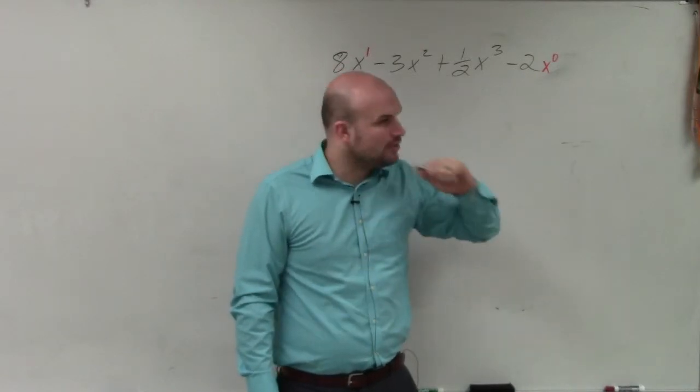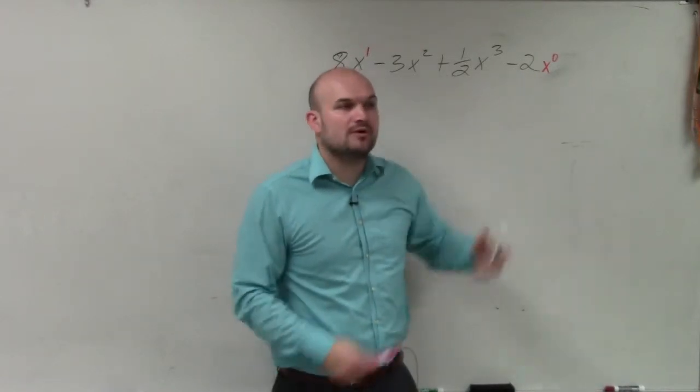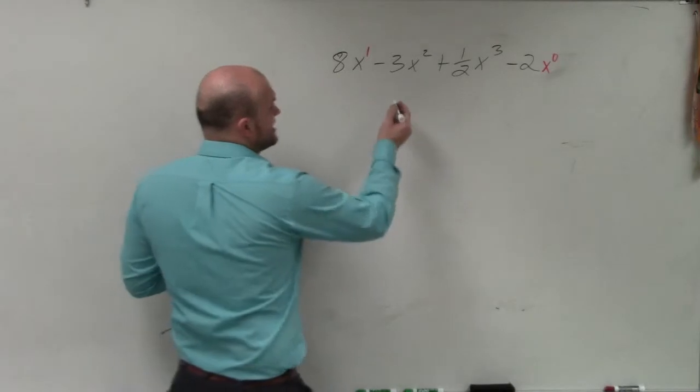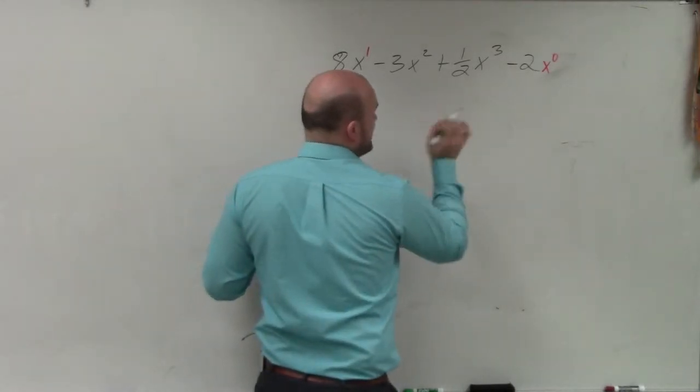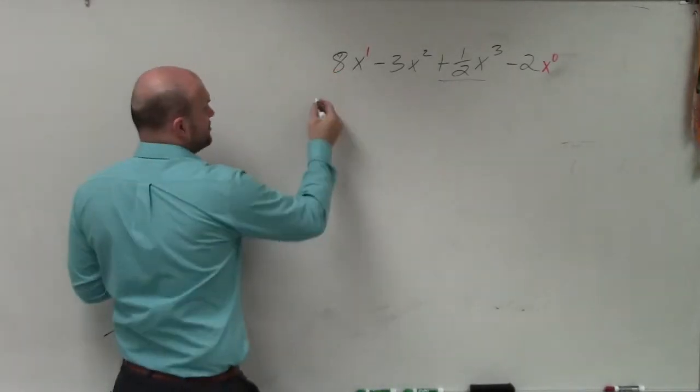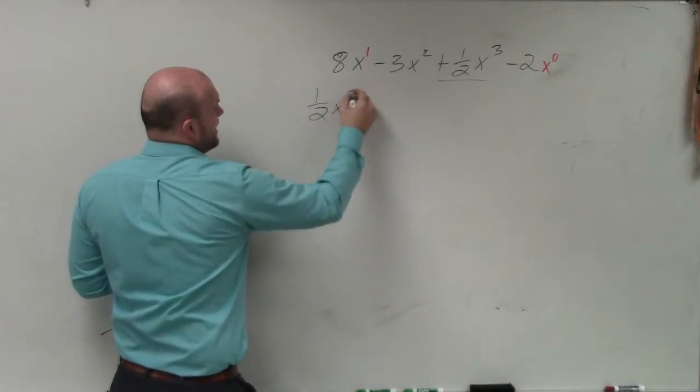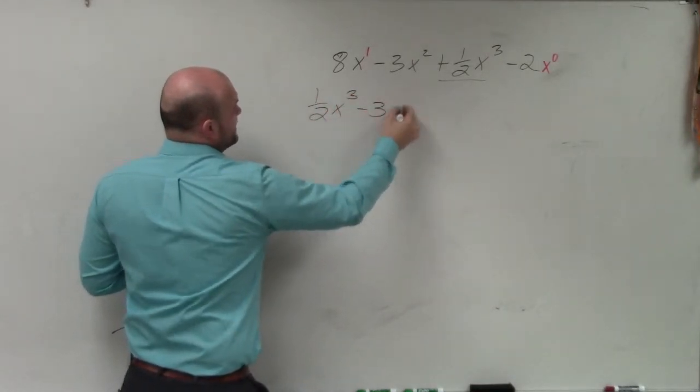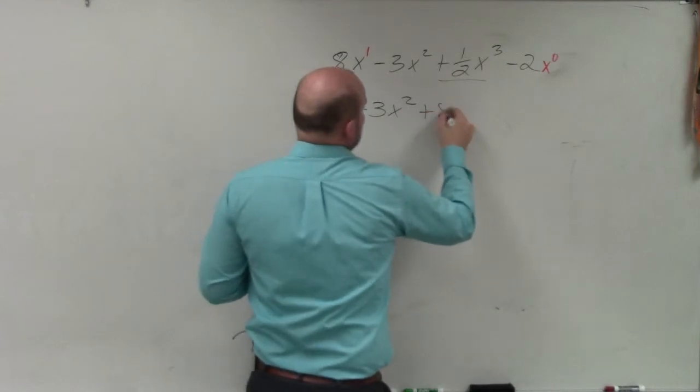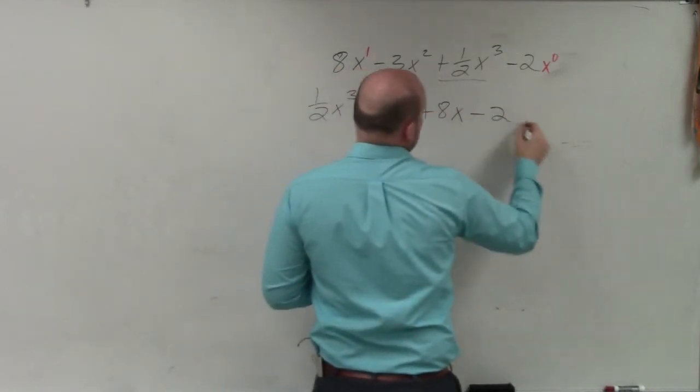So you want to go in descending order with the largest power first. The largest exponent with the largest power is 1 1/2 x cubed. So I write that first: 1 1/2 x cubed minus 3 x squared plus 8 x to the first minus 2.